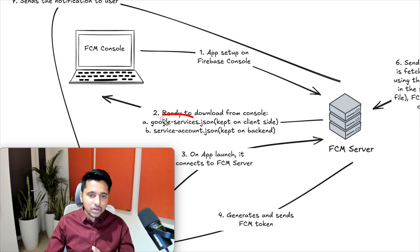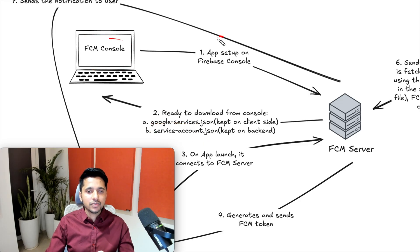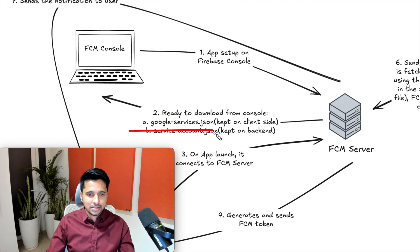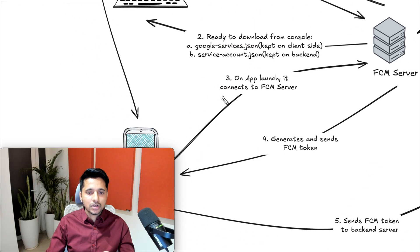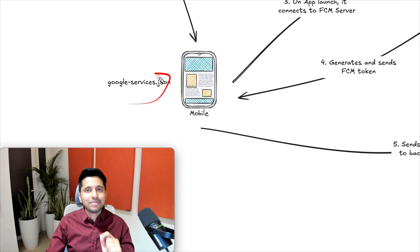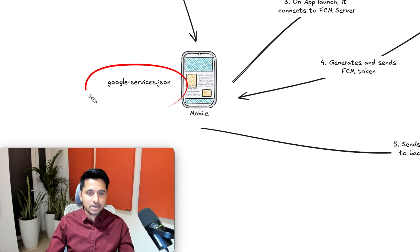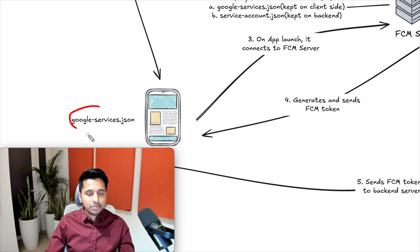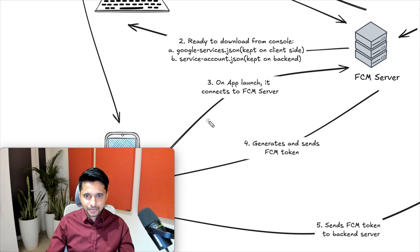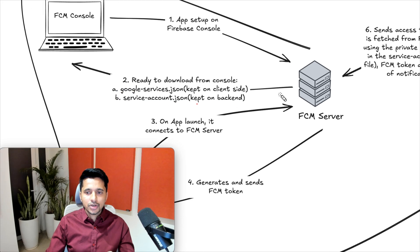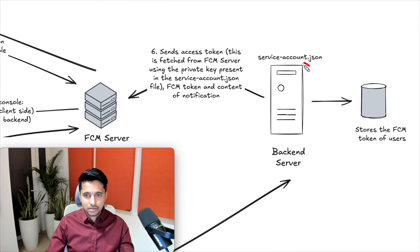We can download both files from the FCM console. After putting in all the information, we should be able to see two buttons, and by clicking on those buttons we can download them. We need to keep google-services.json on the client — in your Android application project — and service-account.json on your own backend server.